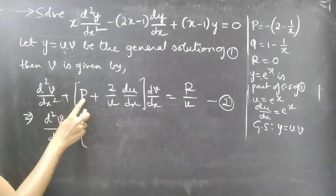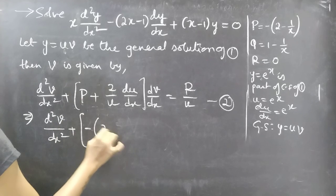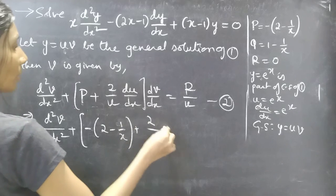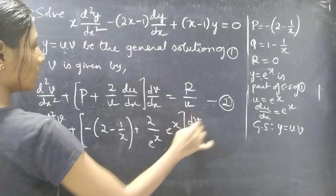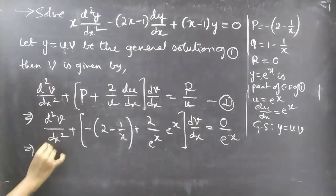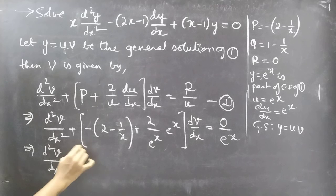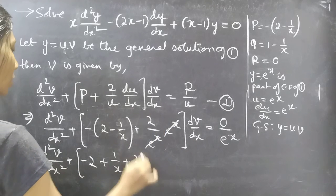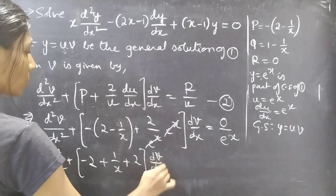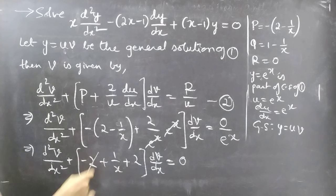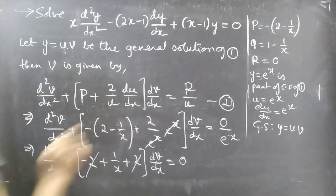Substituting into equation 2: d²v/dx² + [−(2 − 1/x) + 2/eˣ · eˣ] dv/dx = 0/eˣ. The eˣ terms cancel giving 1, and −2 + 2 cancels, so we get: d²v/dx² + (1/x) dv/dx = 0.